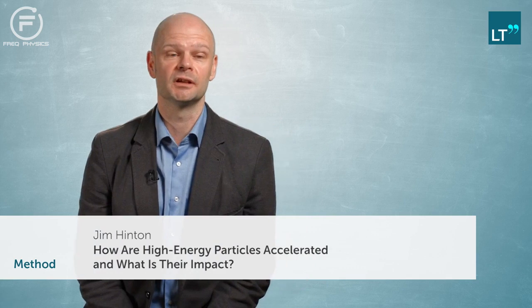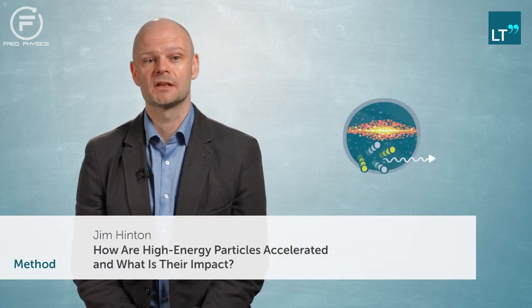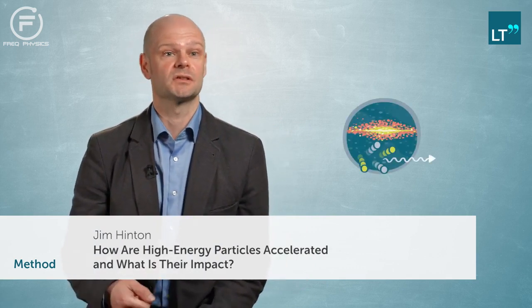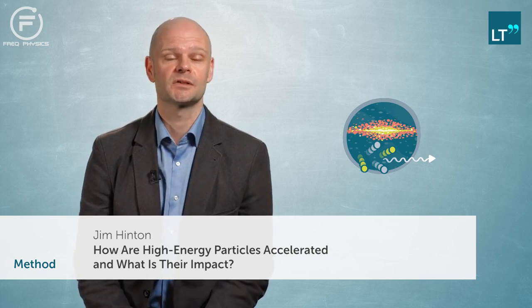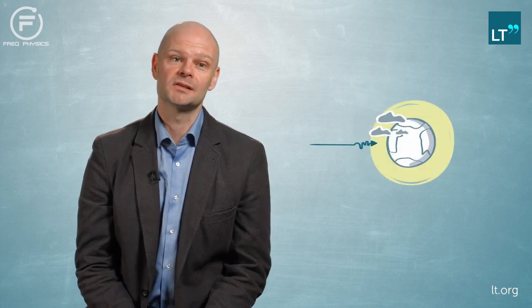The method we use is to look for very high energy gamma rays. These gamma rays are produced in the interactions of accelerated charged particles and travel in straight lines towards the Earth. Gamma rays don't reach the surface of the Earth. They interact in the Earth's atmosphere. For low energy gamma rays, this means they're basically absorbed.